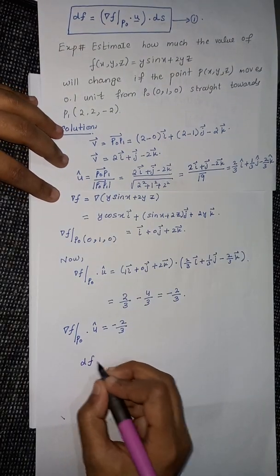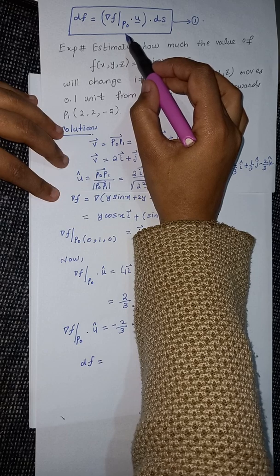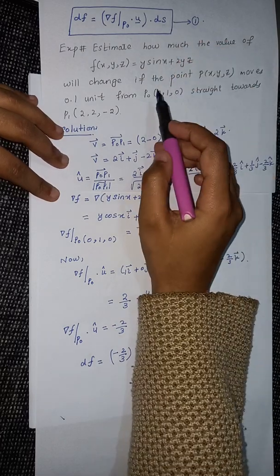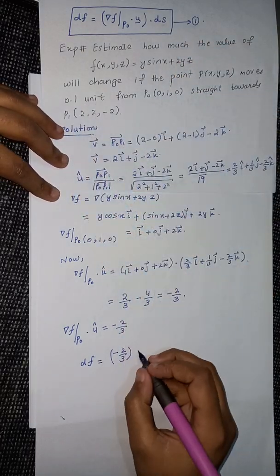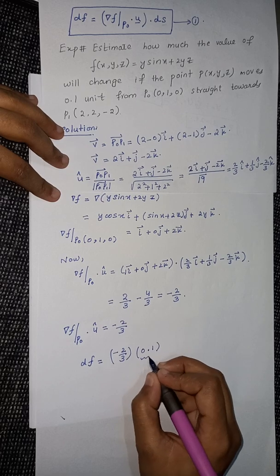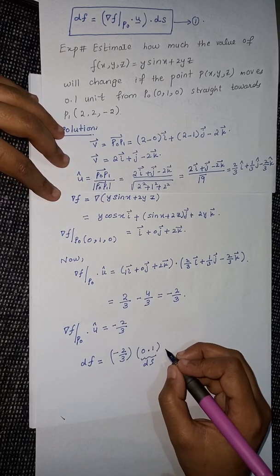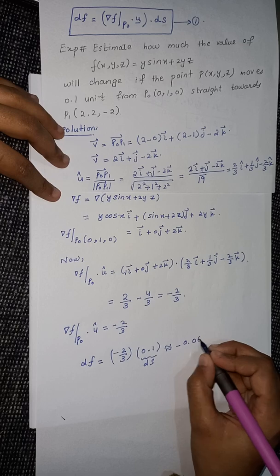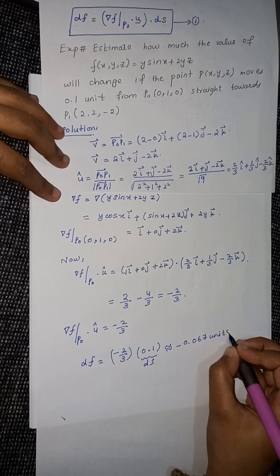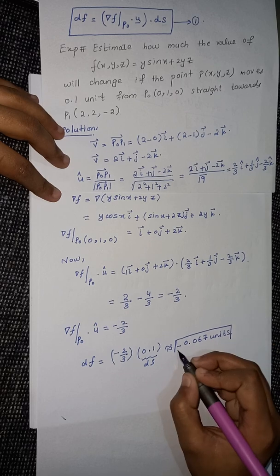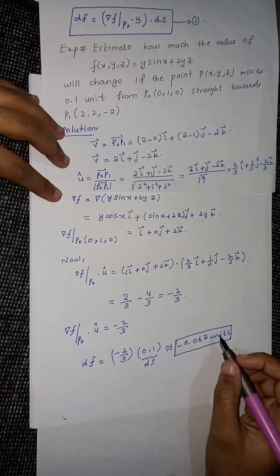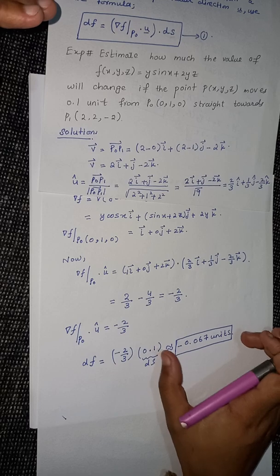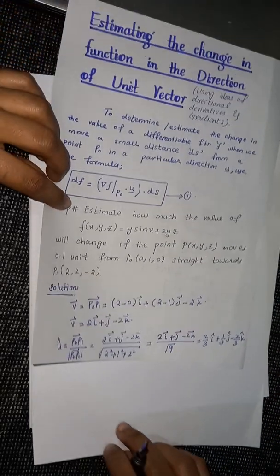From our formula, df = (∇f at p₀) · û × ds. That equals (−2/3) × 0.1, since ds = 0.1 units as given. Simplifying, df ≈ −0.067 units. This is the change in our function when the point moves 0.1 units from p₀ toward p₁.